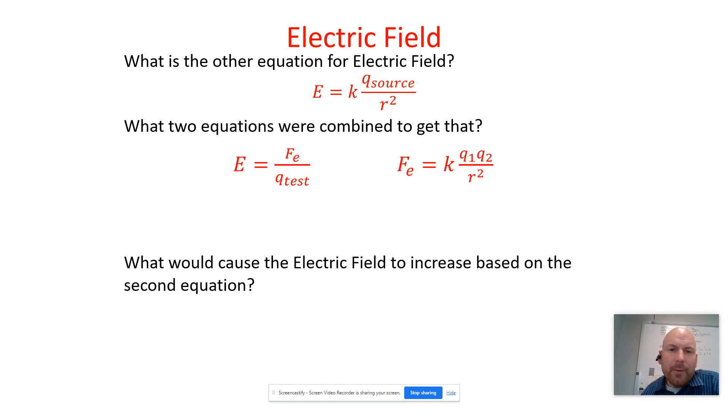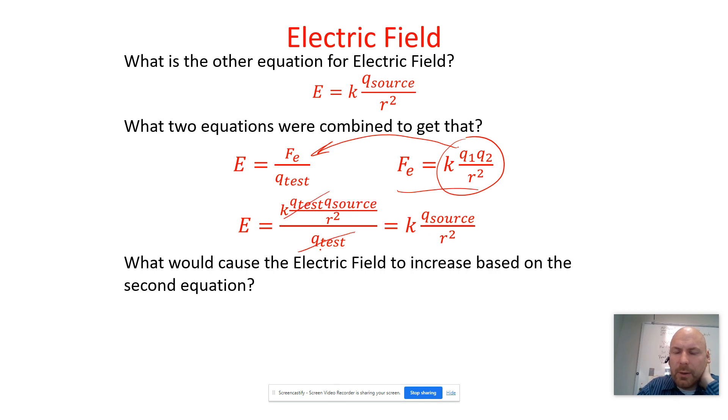Where did that come from? Well, it came from these two equations. So you have Coulomb's law, and then we're going to substitute this in for electrical force, the electric field we just found. And so what happens here is this cancels out the test charge, and we're left with this expression.